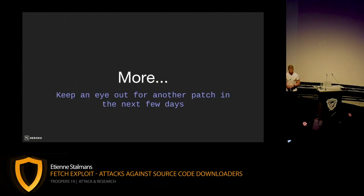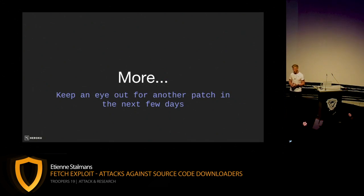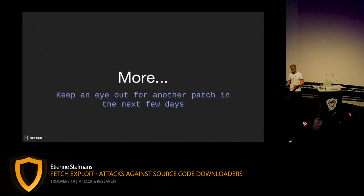This is where my presentation hits a bit of a snag — I was really hoping to demonstrate a third vulnerability that relies on git in the background. Unfortunately the patches aren't out yet. There's a vulnerability in Docker build itself — the way it interacts with git, you can get code execution. There should be a patch coming out at the end of this month, so keep an eye out for it. I'll be doing a blog post on that and the link will be in the slides.